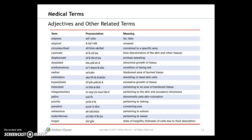Moving on to adjectives and other related terms — here we put the prefixes and suffixes together. Terms include: adipose, atypical, circumscribed, cyanosis, diaphoresis, dysplasia, erythematosus, eschar, exfoliation, hyperplasia, indurated, integumentary, pallor, pruritic, purulent, sebaceous, sudoriferous, and turgor.